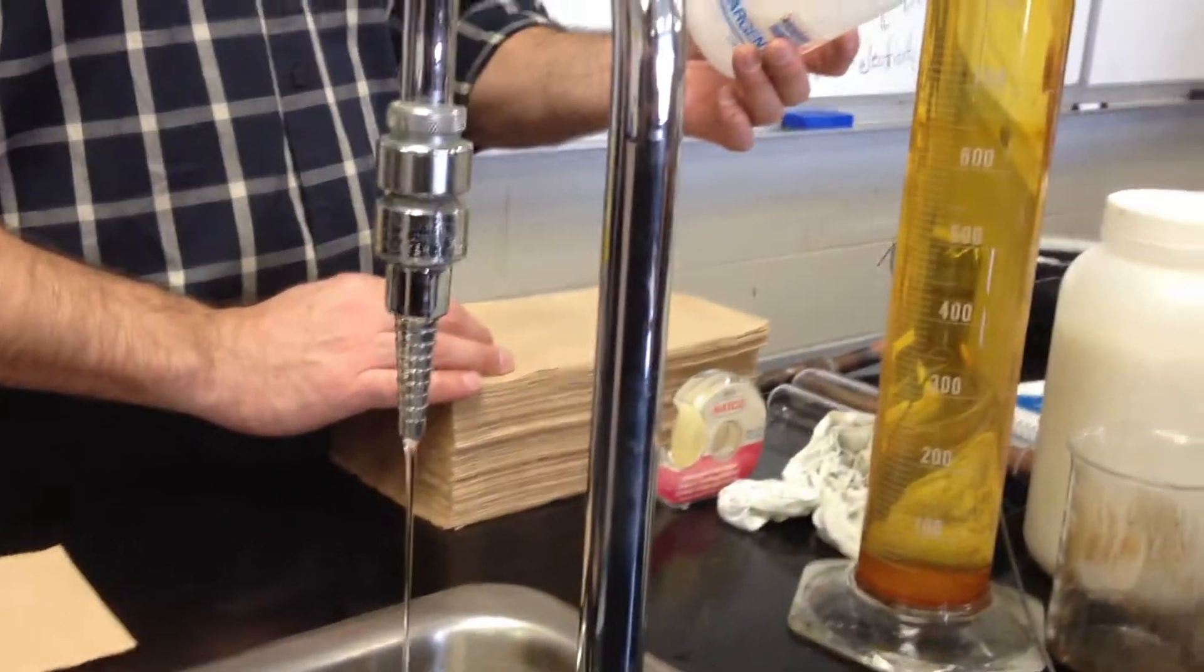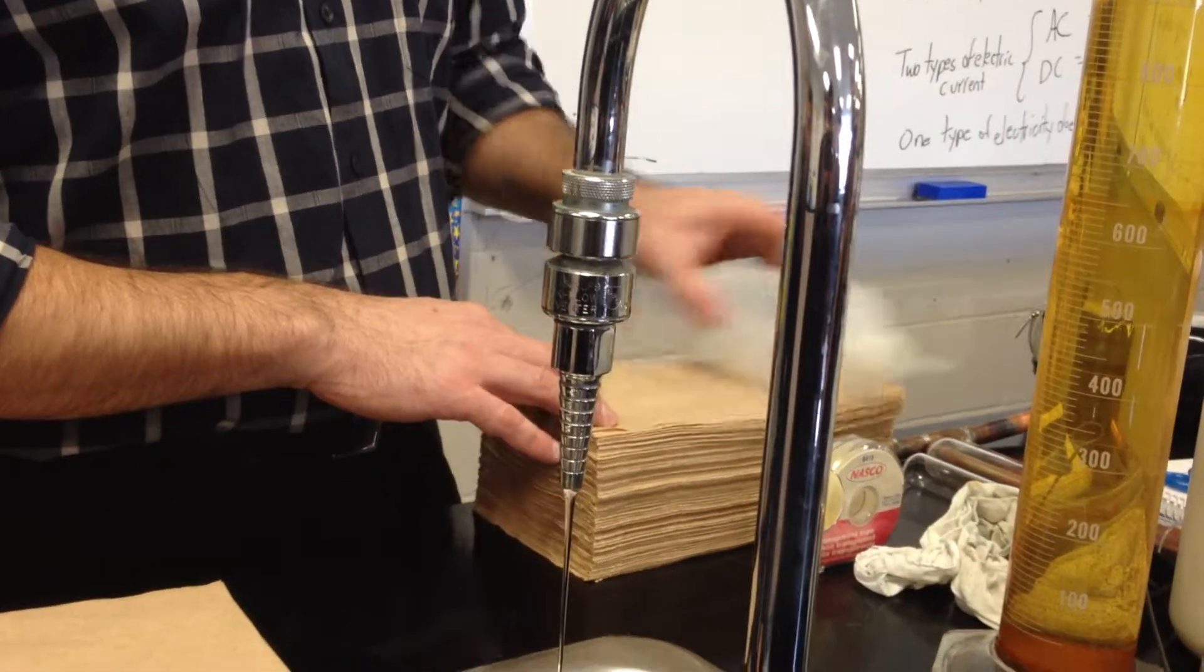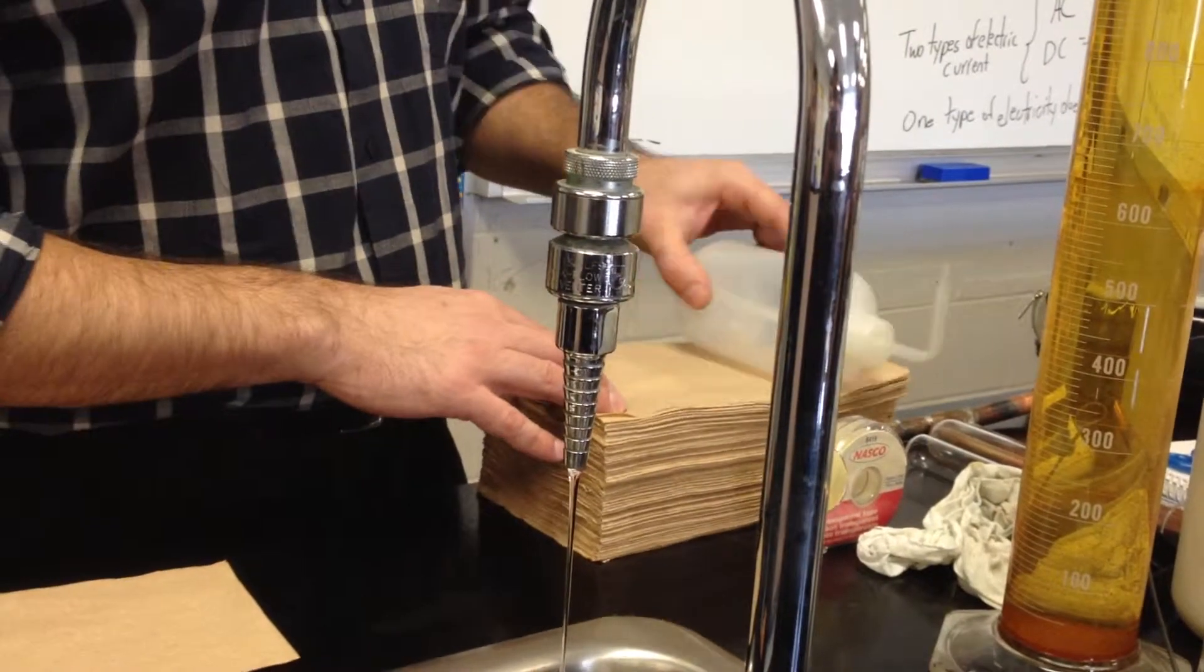What I'm doing is I'm rubbing this polypropylene plastic bottle so that it steals some of the electrons from the paper. I think that's what happens.